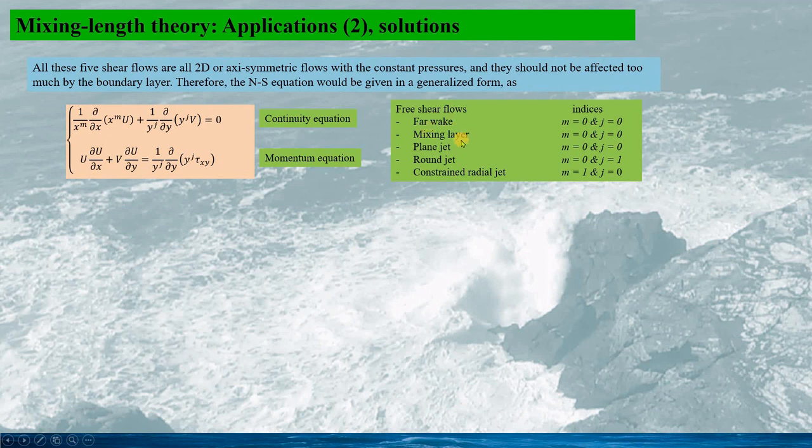For the far-wake, mixing layer and the plane jet, m and j are all 0. For the round jet, m is 0 and j is 1. And for the constrained radial jet, m equals to 1 and j is 0. And the mixing length has a general form as this. Here alpha is the closure coefficient.